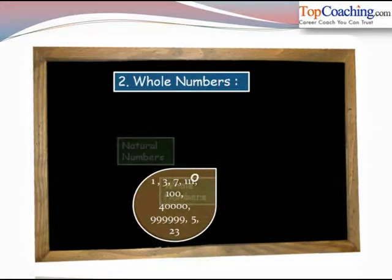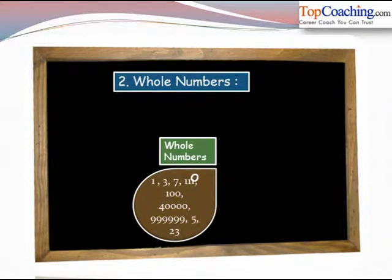Now what happens is if we add a 0 to this bag, then this bag becomes a set of whole numbers. Thus whole numbers are nothing but natural numbers plus the element 0. So this bag consists of whole numbers.